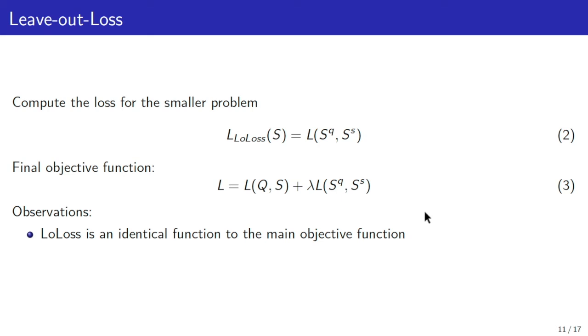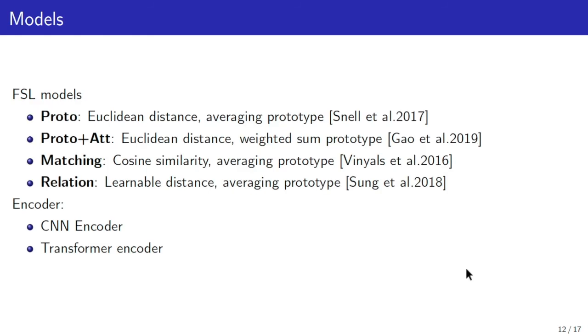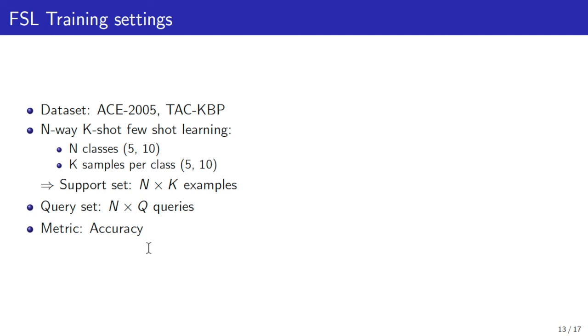In order to evaluate our proposed method, we employ four baseline models: the prototypical network, hybrid attention prototypical network, the matching network, and the relation network. We employed two kinds of encoder which are CNN and transformer encoder. We evaluate the performance of the models on ACE 2005 and TAC-KBP datasets. These are two benchmark datasets in event detection.